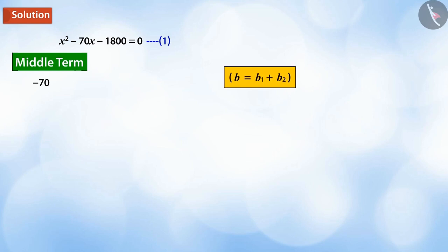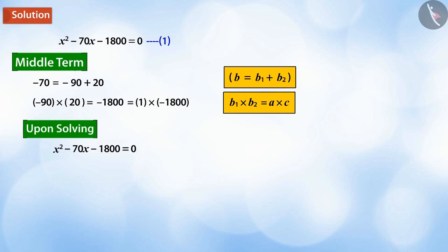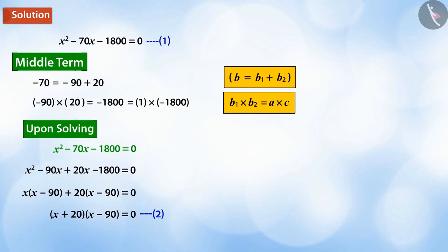Let's break the middle term of equation -70x in two parts as -90x and +20x. Therefore, on solving the quadratic equation x² - 90x + 20x - 1800 = 0, we can write the equation as a product of its factors as (x + 20)(x - 90).